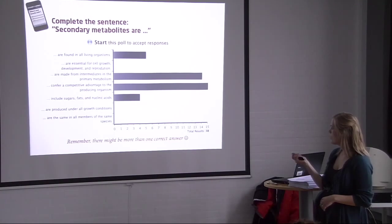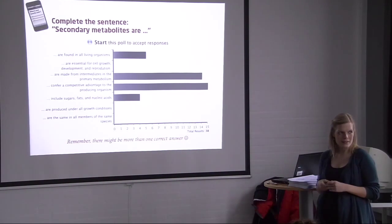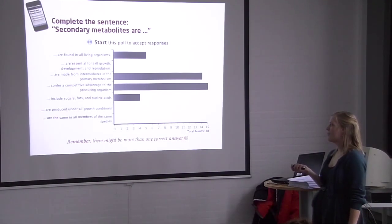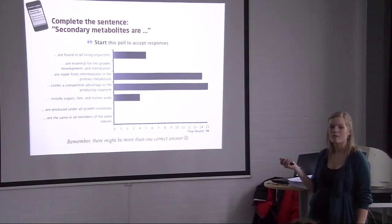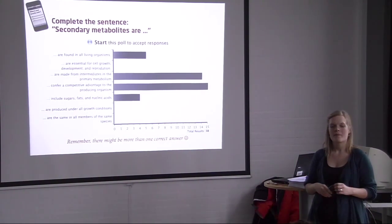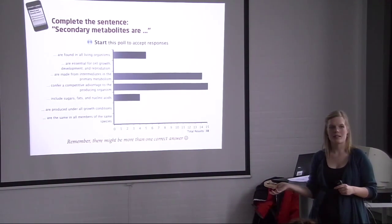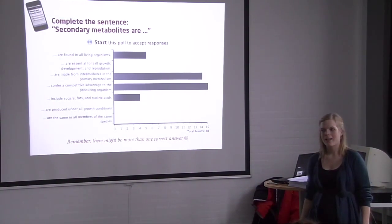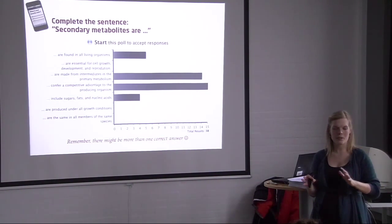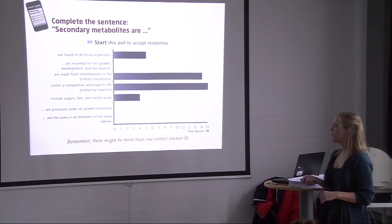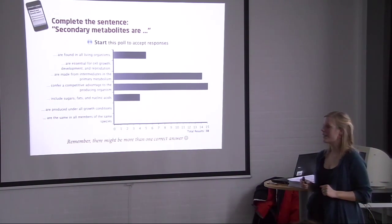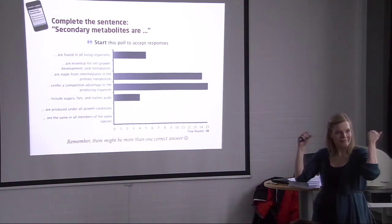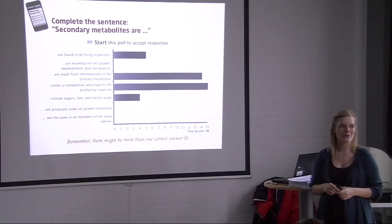A few of you voted that secondary metabolites include sugars, fats, and nucleic acids. This is interesting because it's neither true nor wrong — there's a gray area, particularly with sugars and fatty acids, between primary and secondary metabolism. None of you voted that they are produced under all growth conditions — excellent, that is true. Secondary metabolism is very much dependent on growth conditions. And none of you thought they are the same in all members of the same species, which is also correct, because it's actually a way we can differentiate different species. Well done — you fulfilled one of the first learning objectives of this course.